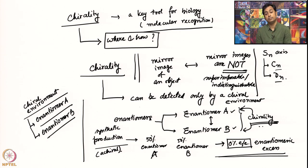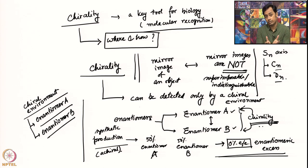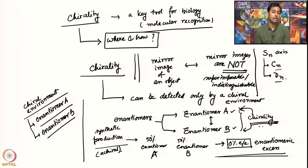Imagine enantiomer A and enantiomer B are both acidic in nature — they are enantiomeric acids. If I put them in a chiral environment with an enantiomeric base, these two enantiomers will interact, and because both the environment and the components are chiral, during their interaction they will start differentiating because they are going to form diastereomers as intermediates. Diastereomers, as we know, differ in reactivity.